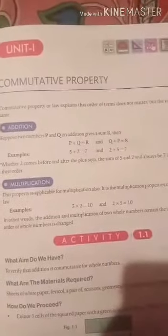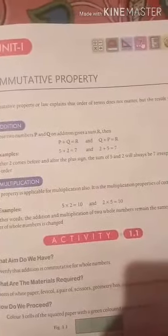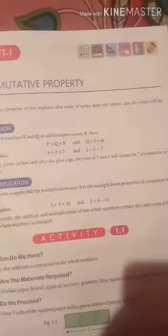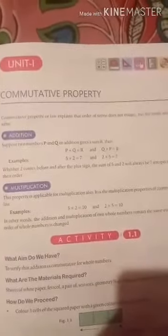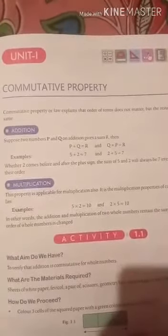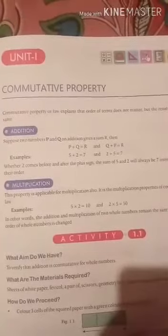Commutative property or law explains that order of terms does not matter, but the result will be the same. In addition, suppose two numbers P and Q on addition gives us sum R.